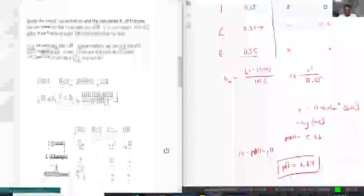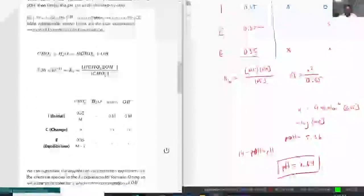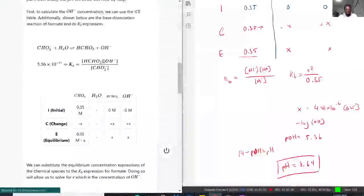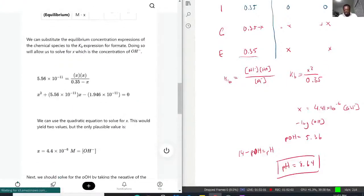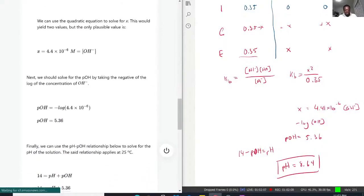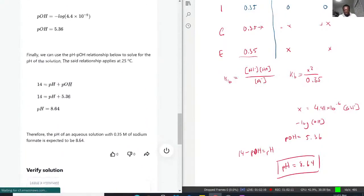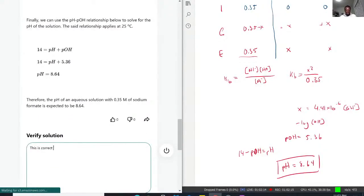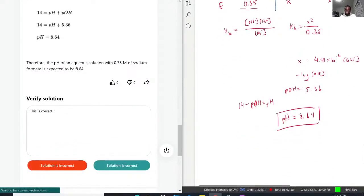So as we can see here, they got the same Kb as us. We have Kb of 5.56 times 10 to negative 11. And then it went out to solve it, which is perfect. That's exactly what we did. So just make sure you check over your work. But overall, their concentration of OH minus should be 4.4 times 10 to negative 6. And then they calculate the pOH, which is 5.36. So then the pH will be 8.64. So with that being said, this is correct. And you can see here how they also broke it down step by step as I did to get that answer.